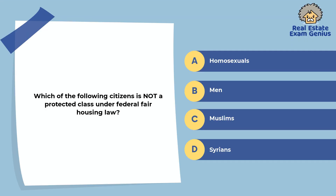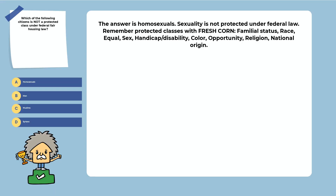Which of the following citizens is not a protected class under federal fair housing law? Homosexuals, men, Muslims, or Syrians. The answer is homosexuals. Sexuality is not protected under federal law. Remember protected classes with 'FRESH CORN': Familial status, Race, Equal, Sex, Handicap/Disability, Color, Opportunity, Religion, National origin.